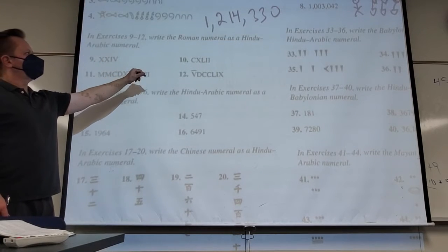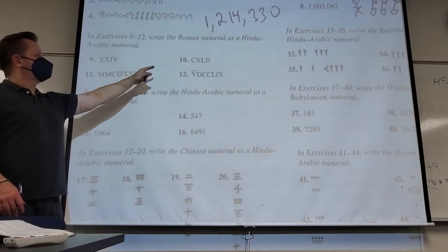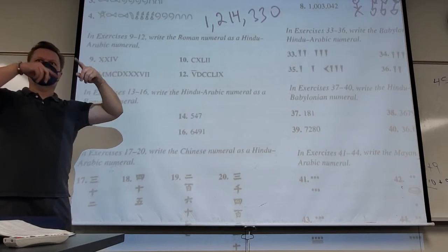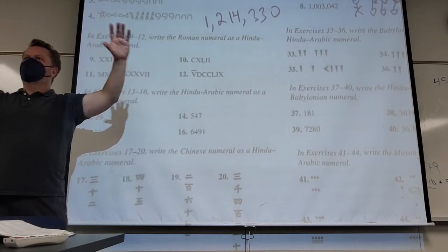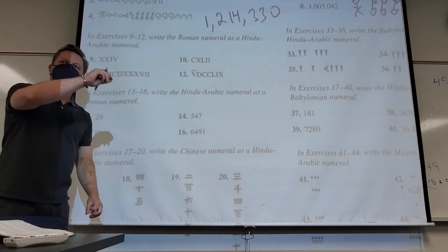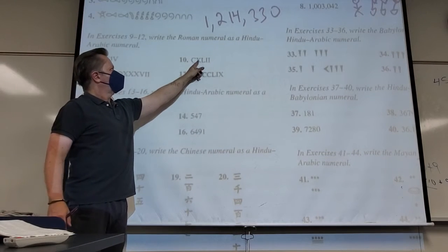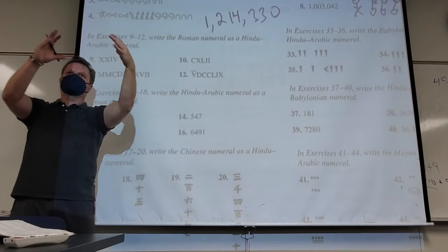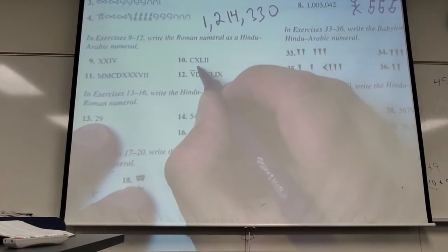All right, so moving on to Romans. What's the very first thing that you need to notice in number 10? What's the one thing that's happening in number 10? What's the very first thing you look for to translate from Roman numerals to Hindu Arabic? Pairs that require you to subtract, right? Because addition is the general rule.